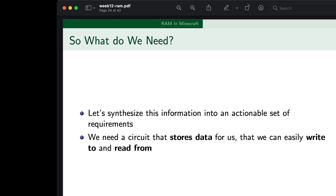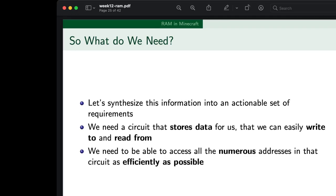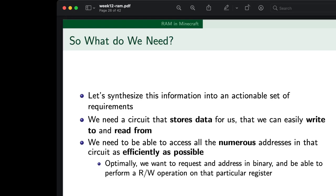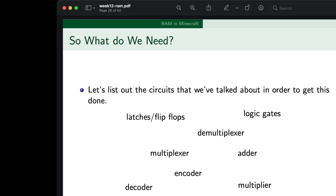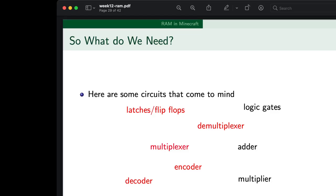So let's synthesize this information into an actionable set of requirements. First and foremost, we need a circuit that stores data for us — one that we can easily write to and read from. We need to be able to access all the numerous addresses in that circuit as efficiently as possible. Optimally, we want to request an address in binary and be able to perform a read-write operation on that particular register.